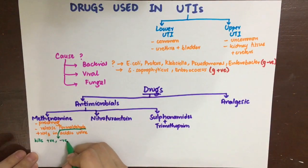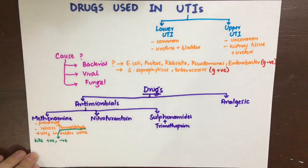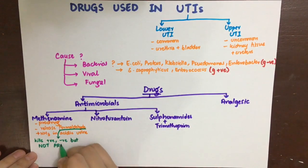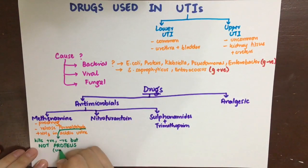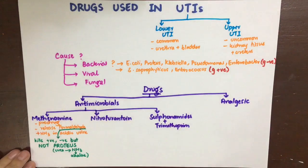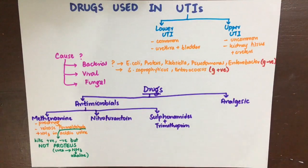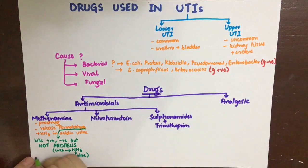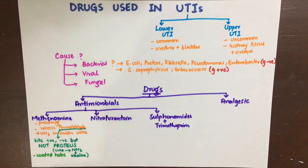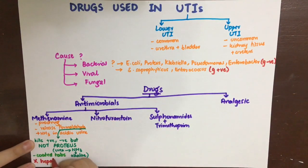Methanamine is ineffective against Proteus because Proteus is urease-positive: it converts urea into ammonia, making the urine alkaline, so this drug — which works best at acidic pH — will not work. It is also given in enteric-coated tablet form; otherwise it would be converted into formaldehyde and ammonia in the stomach, which is undesirable.